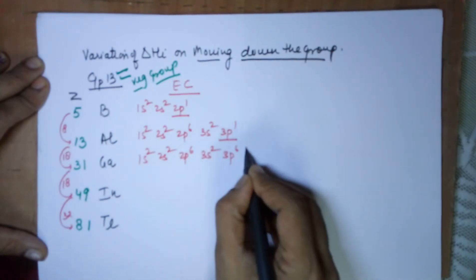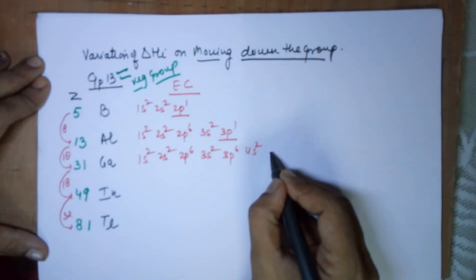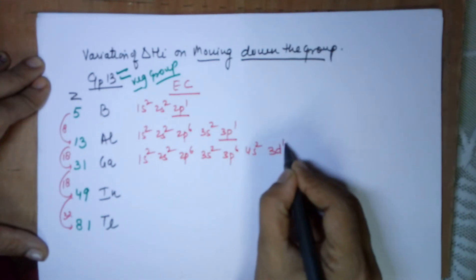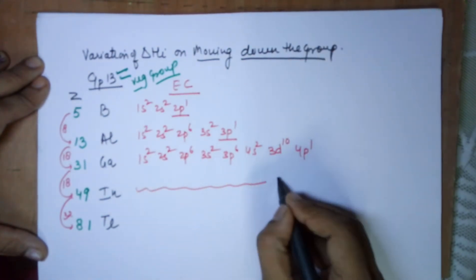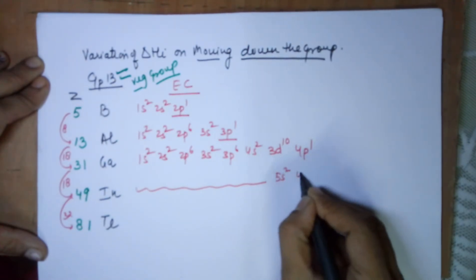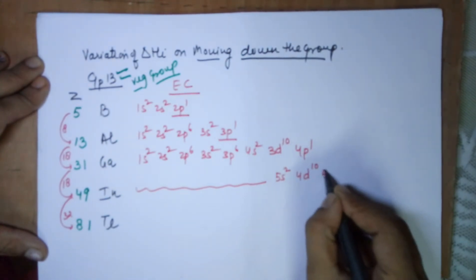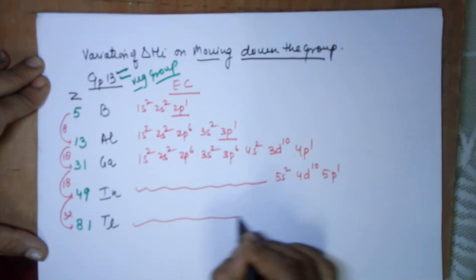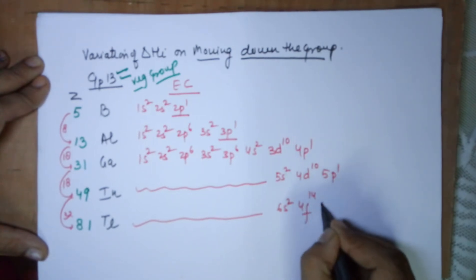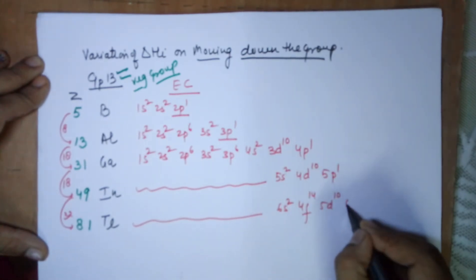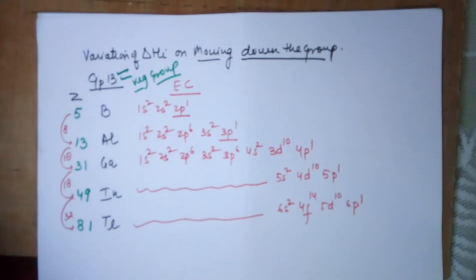Gallium has 4s² 3p⁶ 4s² 3d¹⁰ and then 4p¹. Similarly for indium you have 5s² 4d¹⁰ 5p¹, and for thallium you have 6s² followed by 4f¹⁴ 5d¹⁰ and then 6p¹.